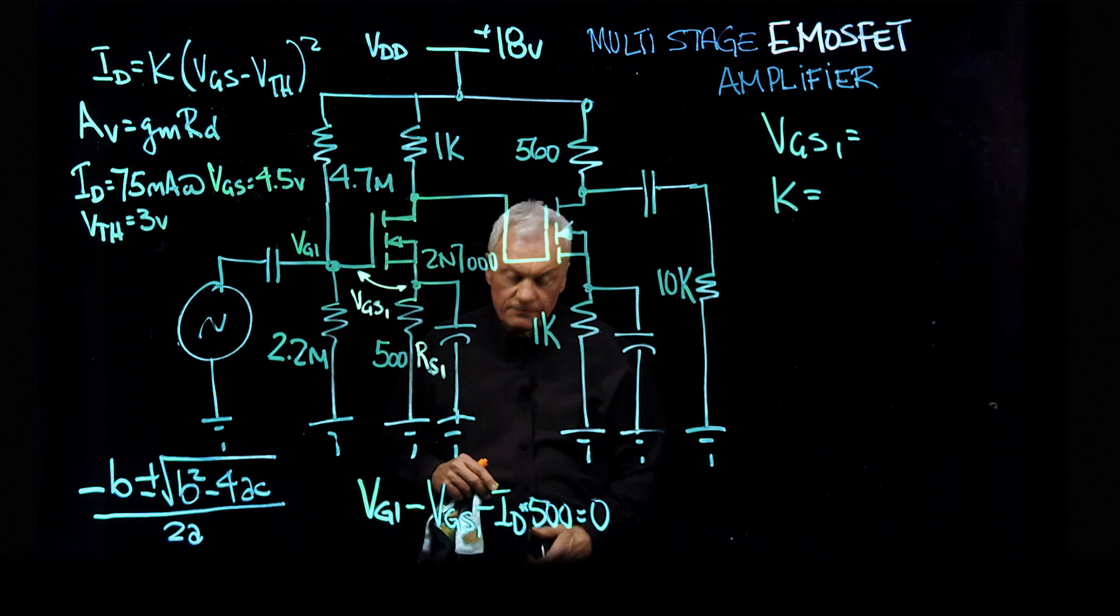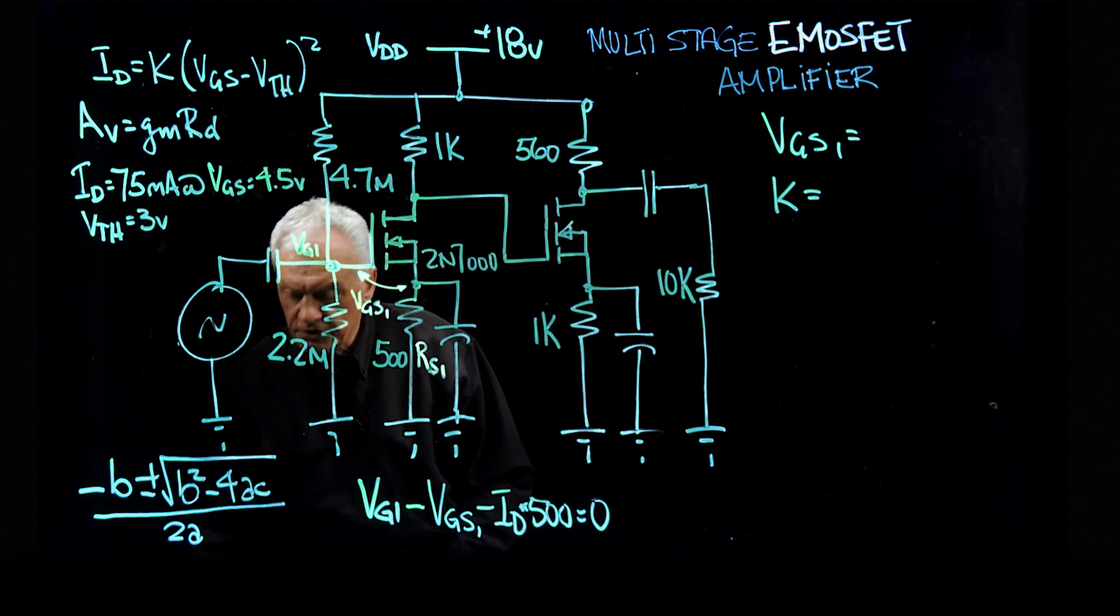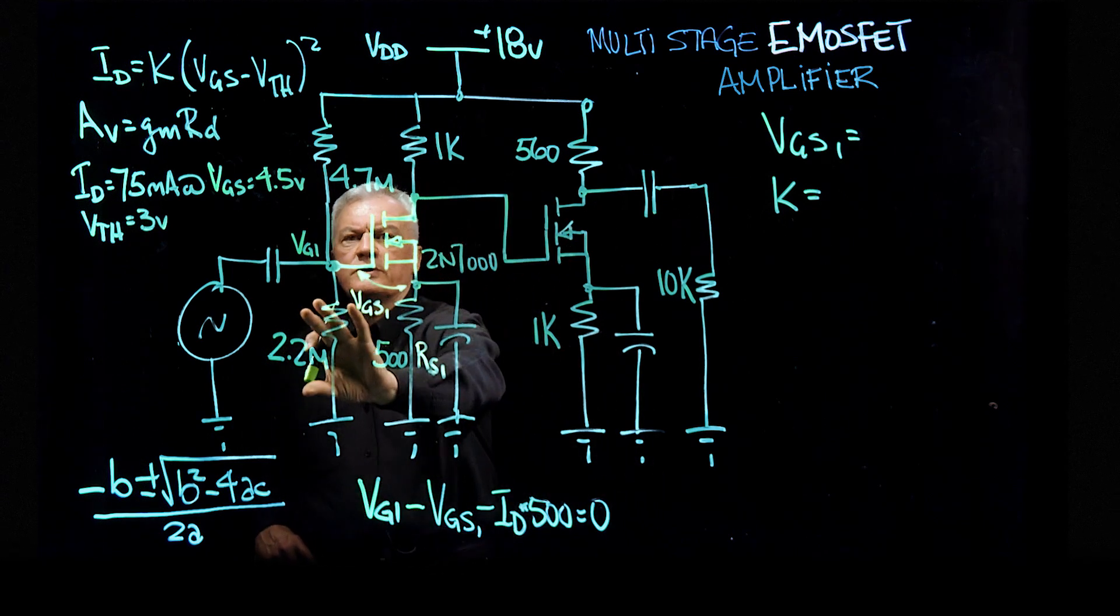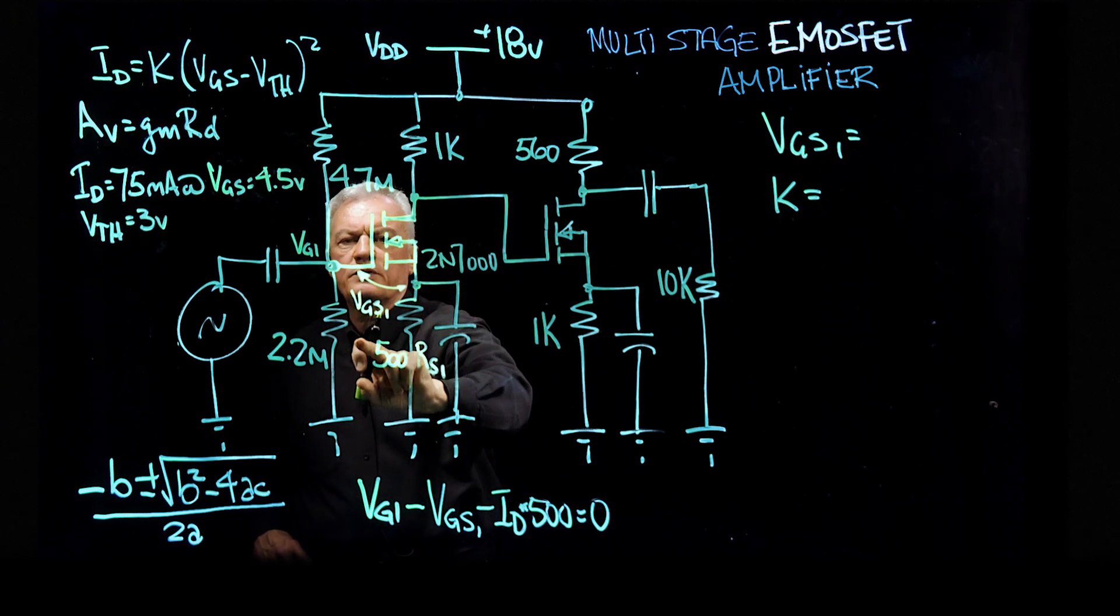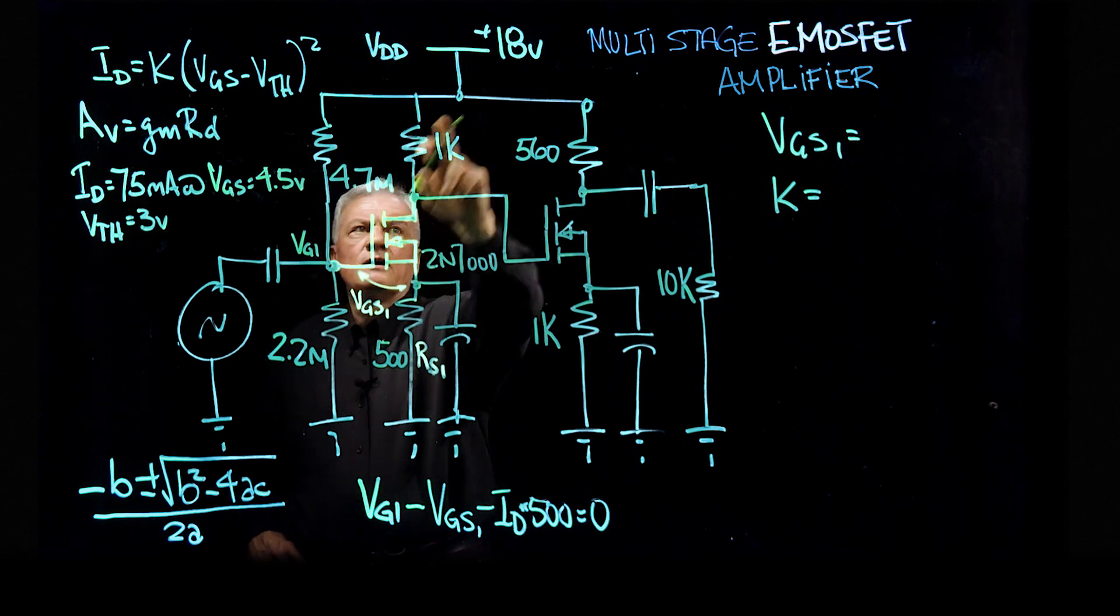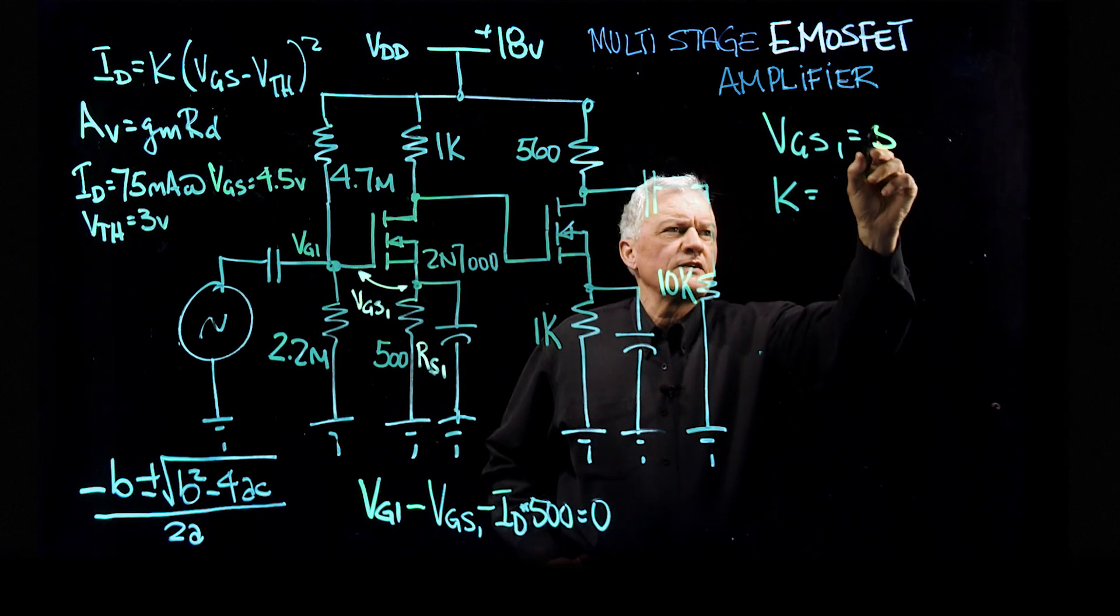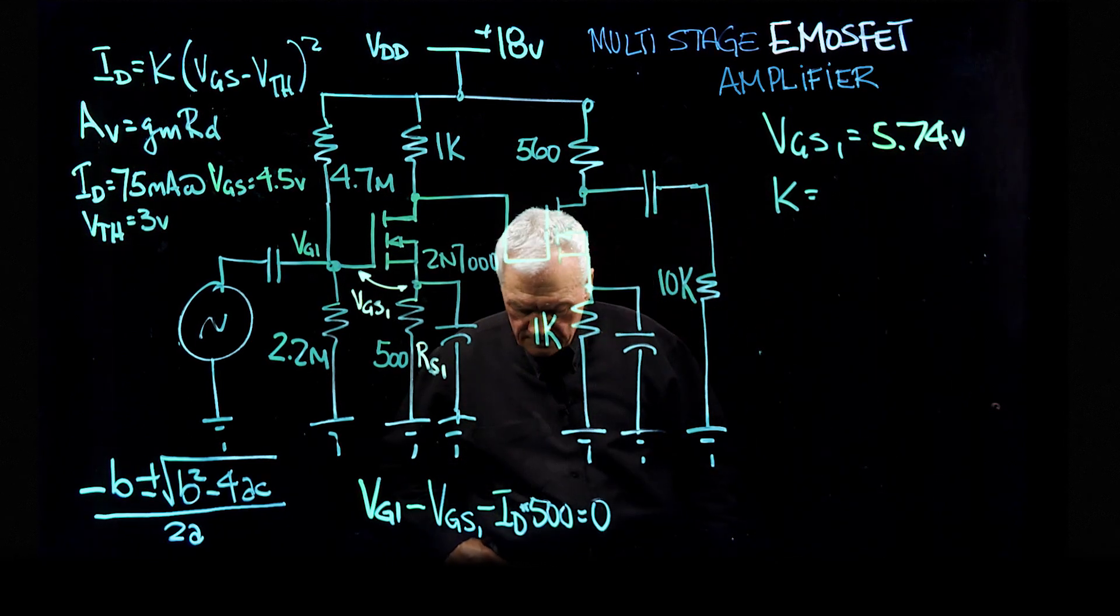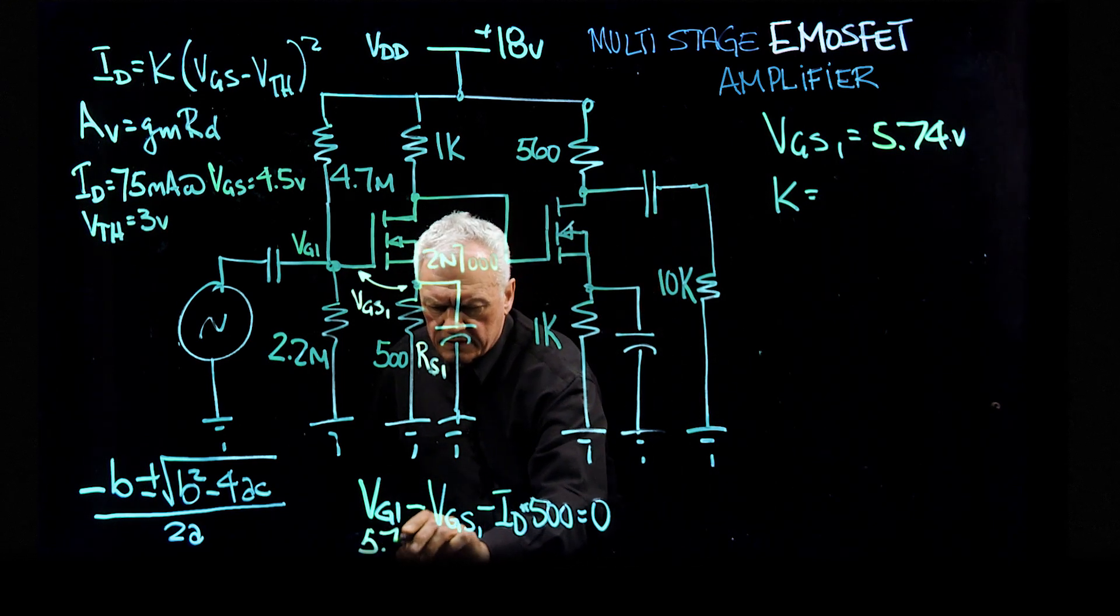With that plus and minus expression, we have to determine which one is real and which one is not. So let's do the simple stuff first. The first thing is to figure out what is the voltage at this particular point. So we know that we have a voltage divider. We have 2.2 meg here, 4.7 meg here, 18 volts there. So it's 2.2 divided by the total of this, 6.9 times 18. And if you do that math, 5.74 volts. So we know what the voltage at gate one is, 5.74.